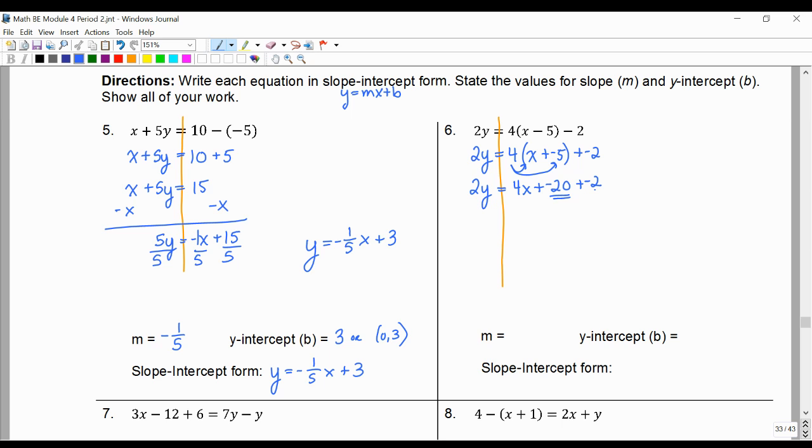Negative 20 plus negative 2 is negative 22. And I can tell that y is almost alone, so we're going to divide everything by 2.